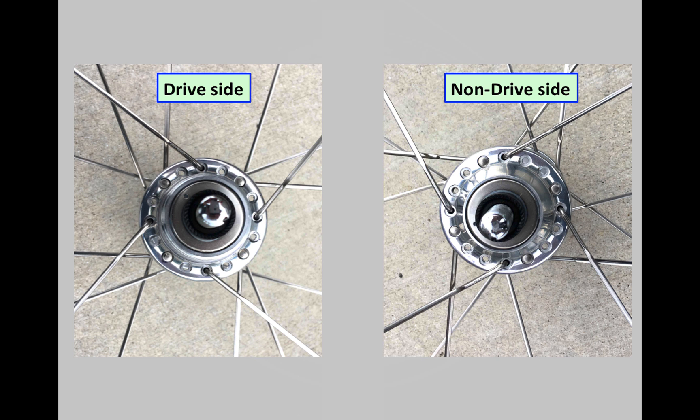But on the non-drive side, we have two holes, two consecutive holes being used. Then two consecutive empty holes, two consecutive holes being used, and so on. Once again, a tangential pattern also on the non-drive side.